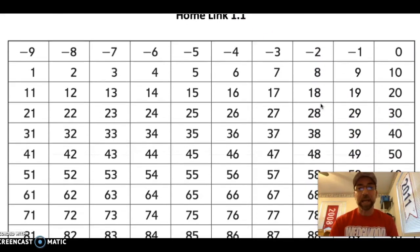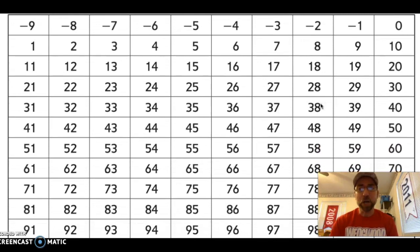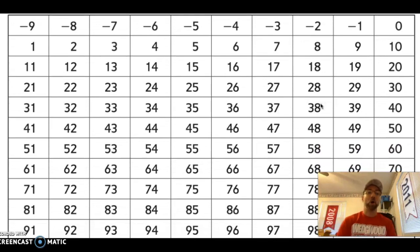So let's take a look at our number grid and try to find some numbers. Notice that when we go across, our numbers count 1, 2, 3, 4, 5, 6, 7, 8, 9, 10, 11, 12, 13, 14, and on and on. Our numbers count by ones when we go across.